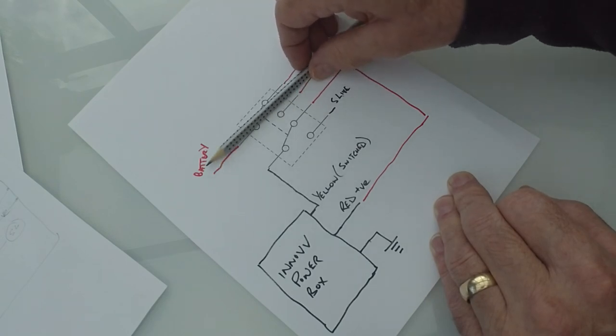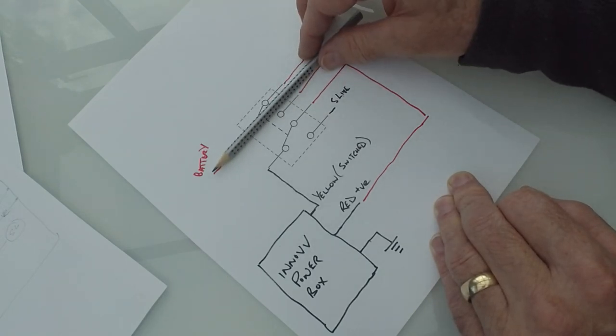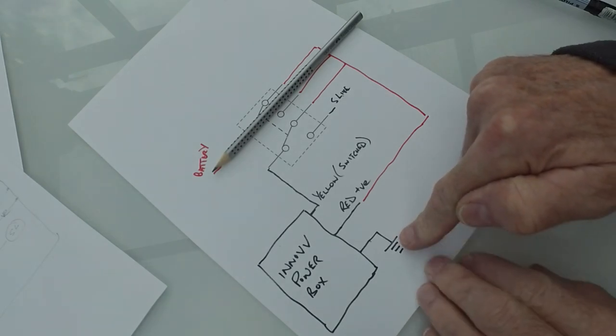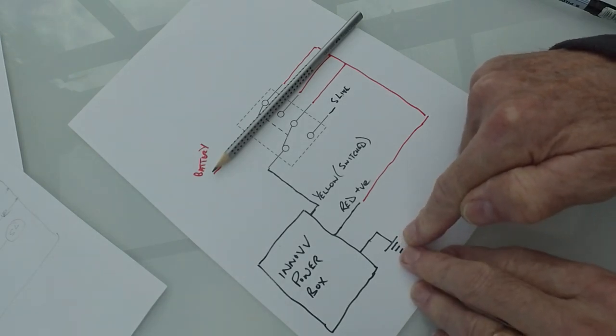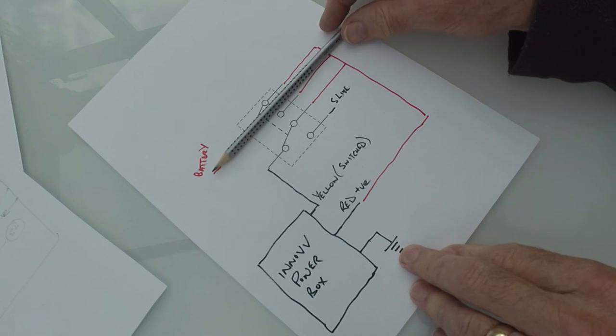In the center position, everything's disconnected. You've got the earth, negative, it still connects the power box, but nothing else is. So it's off, properly off. So it won't drain your battery, for example.